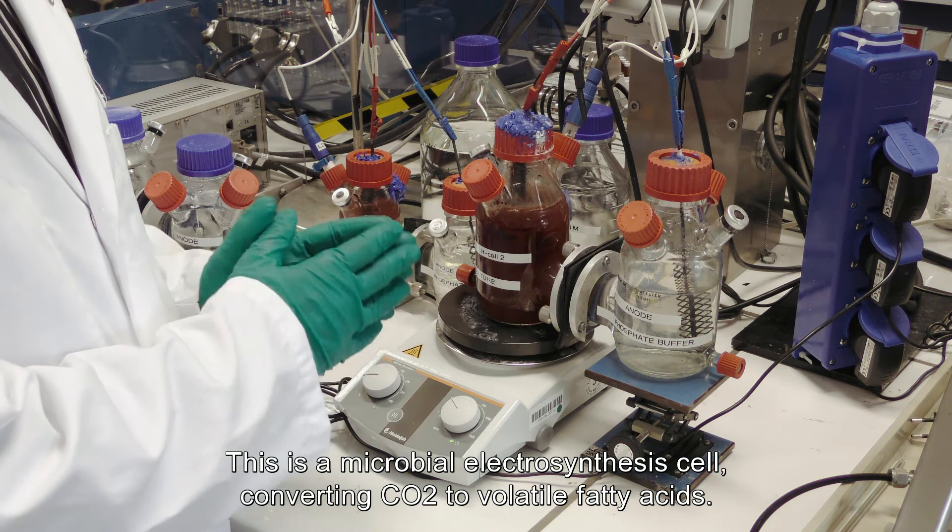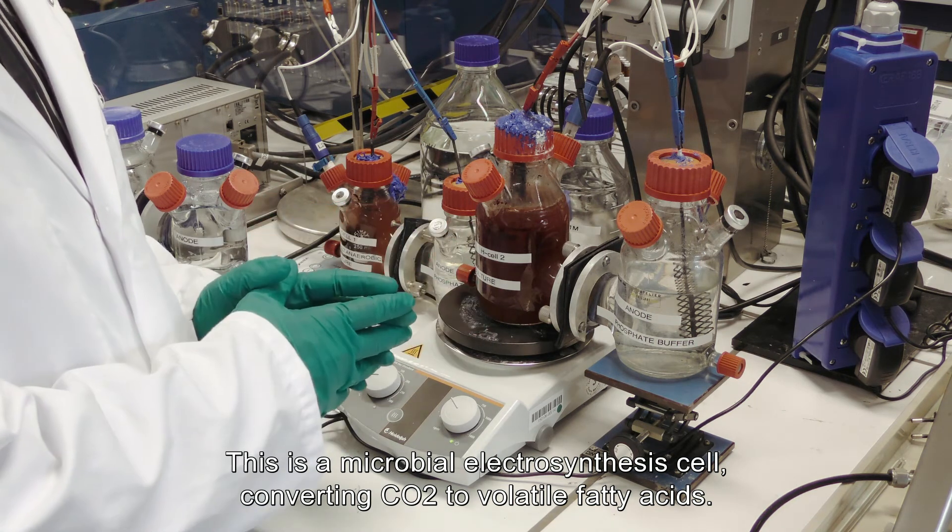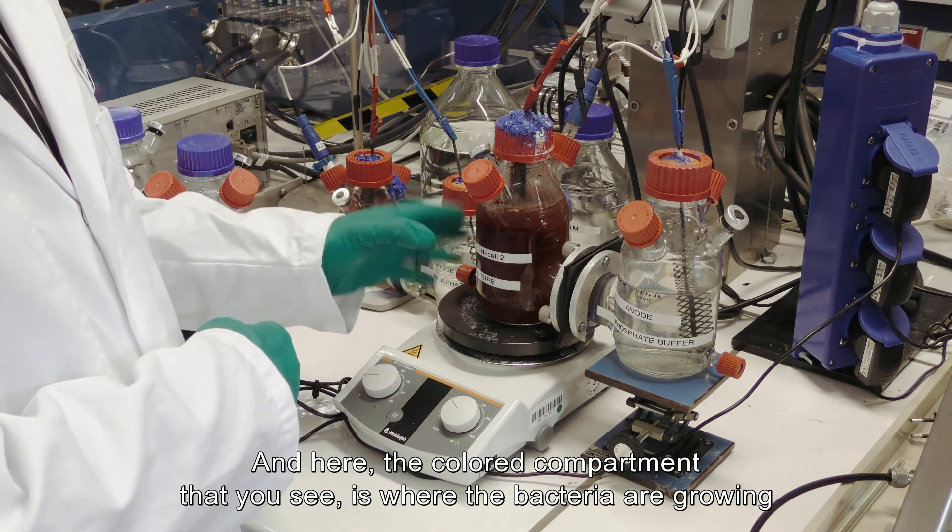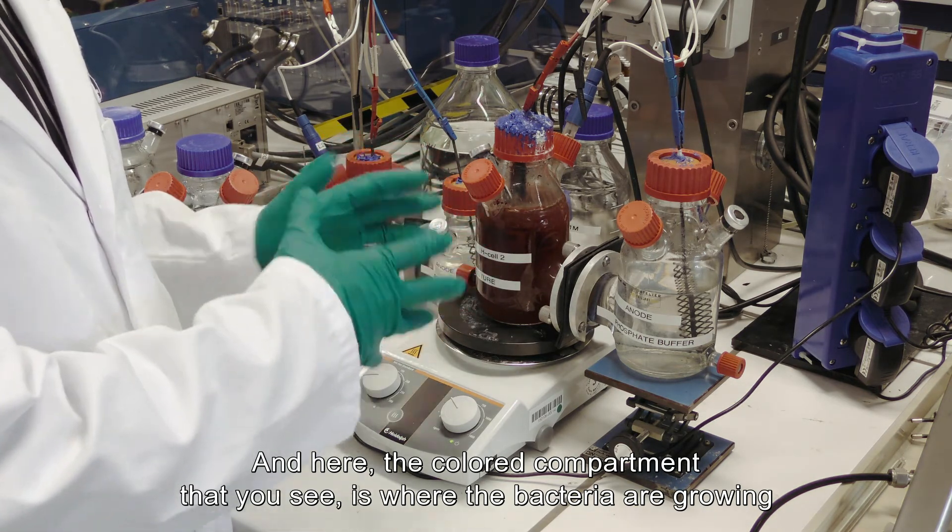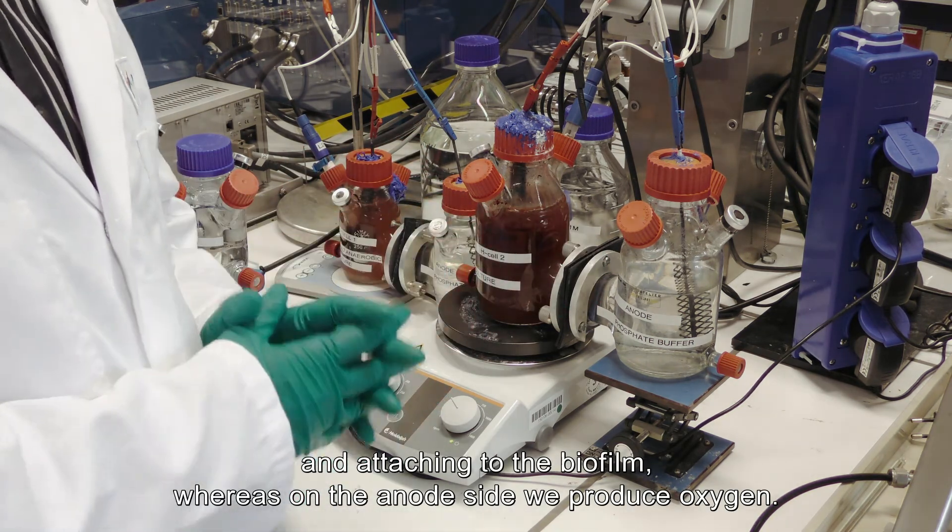In this case this is a microbial electrosynthesis cell converting carbon dioxide to volatile fatty acids. Here the colored compartment that you see is where the bacteria is growing, attaching on the biofilm, whereas on the anode side we produce oxygen.